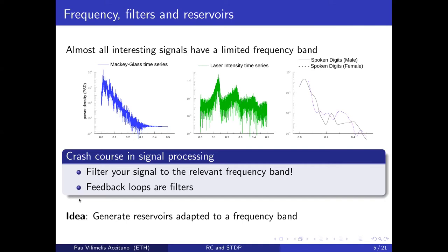The core lesson is that signals almost always occupy a narrow frequency band — a signal with all frequencies equally represented is just white Gaussian noise. The idea is to leverage classical signal processing: filter everything outside the relevant frequency band. For example, if you're looking for arrhythmias in an ECG, filter to the frequency range where arrhythmias occur. Filters can be created using feedback loops — in signal processing these are called infinite impulse response filters.